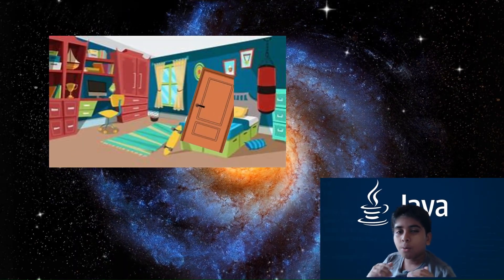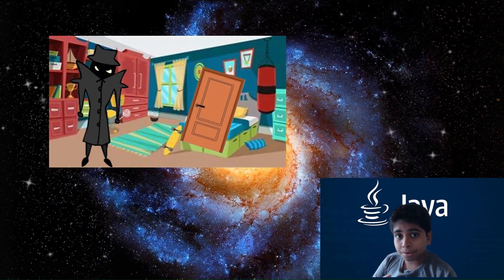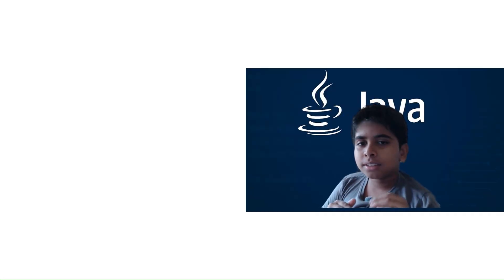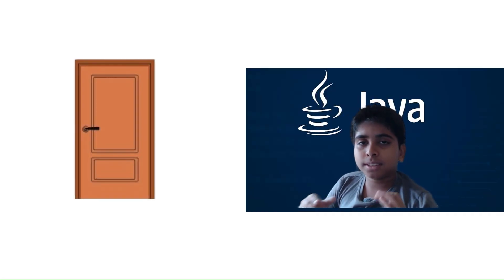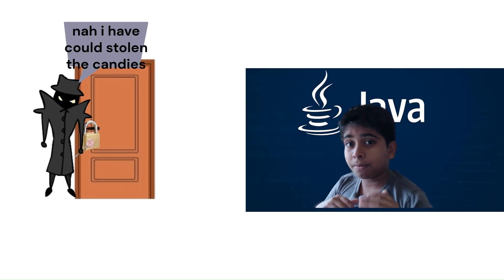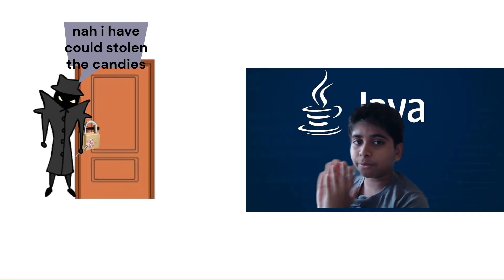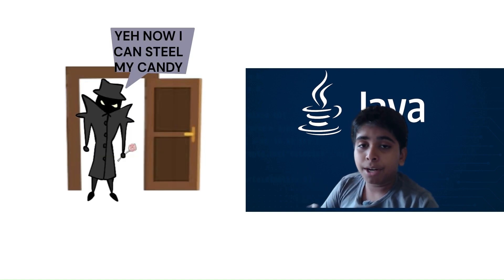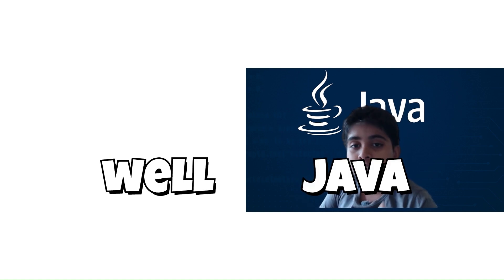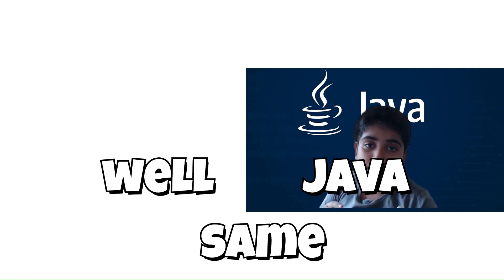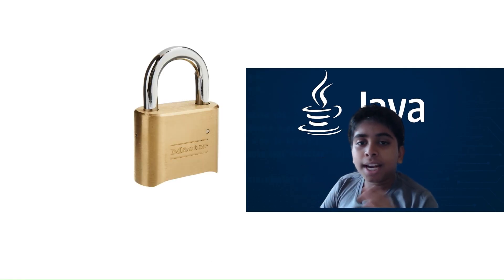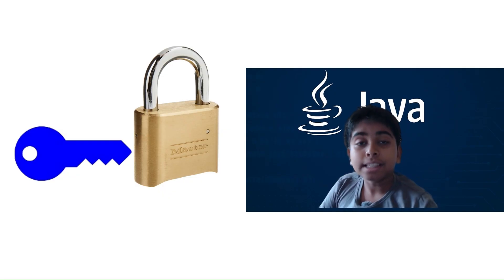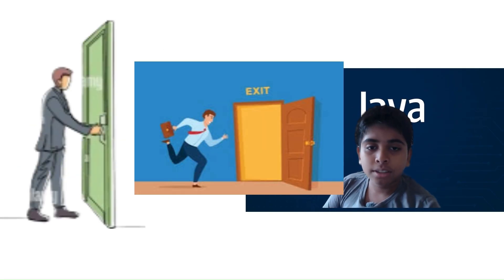Do you like to stay locked in Java? Of course not. Some doors stay locked, some are open only to family, some are open to everyone. Well, Java works the exact same way. Access modifiers are like the locks and keys of your code — they control who gets in and who stays out.